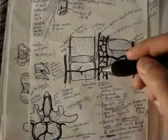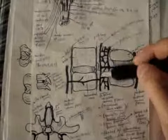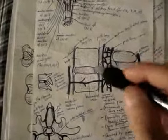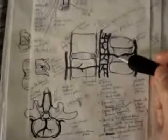The internal vertebral venous plexus, this one here, surrounds the dura mater, the spinal dura mater.